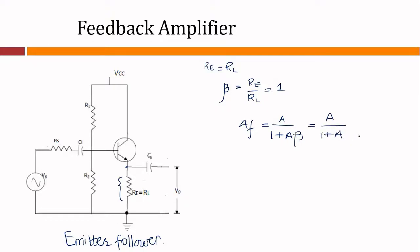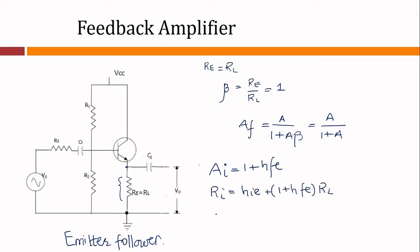The characteristics of an emitter follower are: current gain Ai = 1 + hfe. We will not derive this again in the practical session since it has already been derived in the classes — you can refer to those lectures available online. The input resistance equals hie + (1 + hfe) × RL, and voltage gain is Ai × RL divided by Ri.